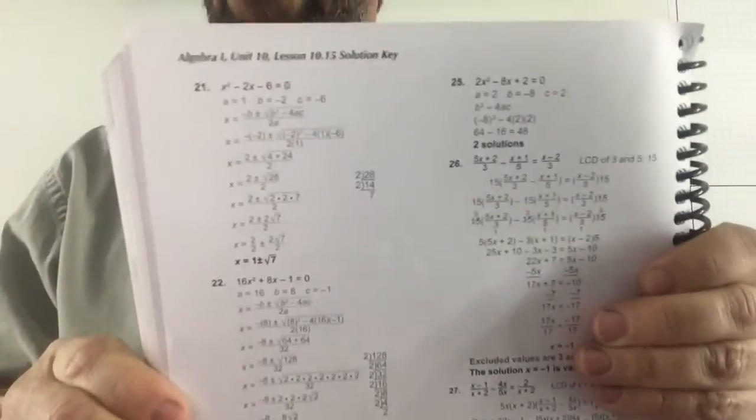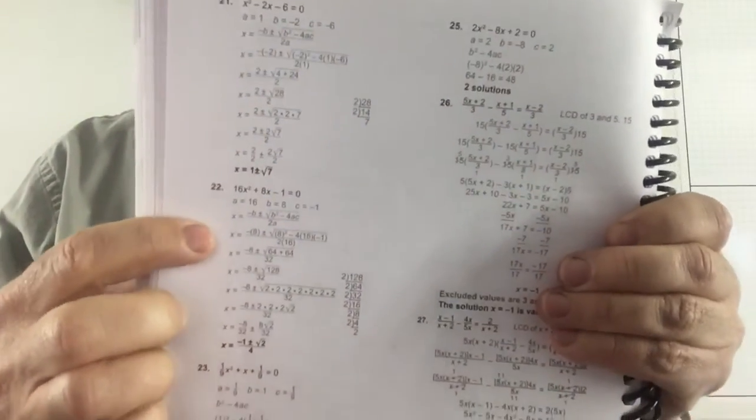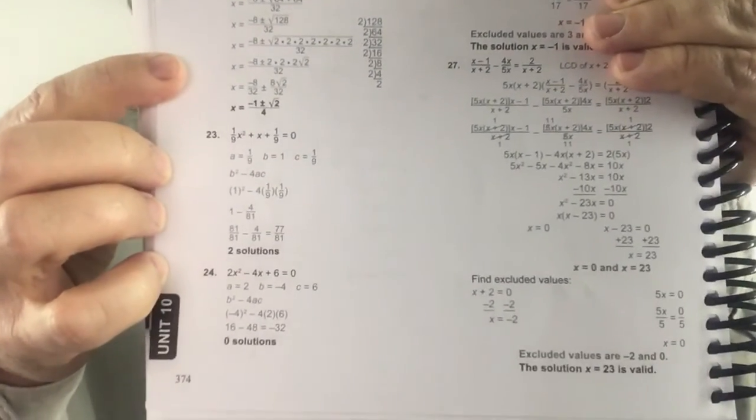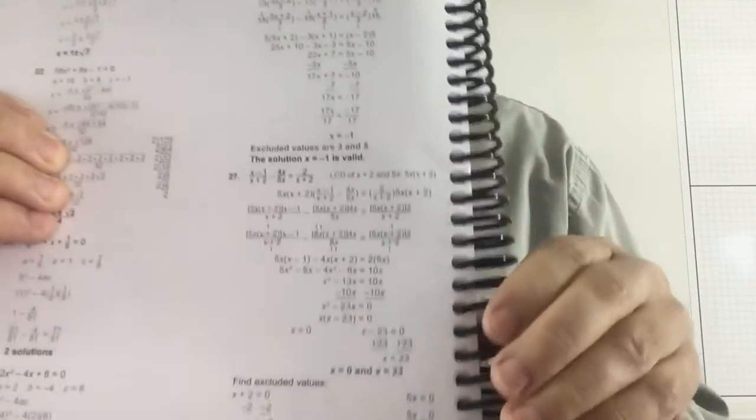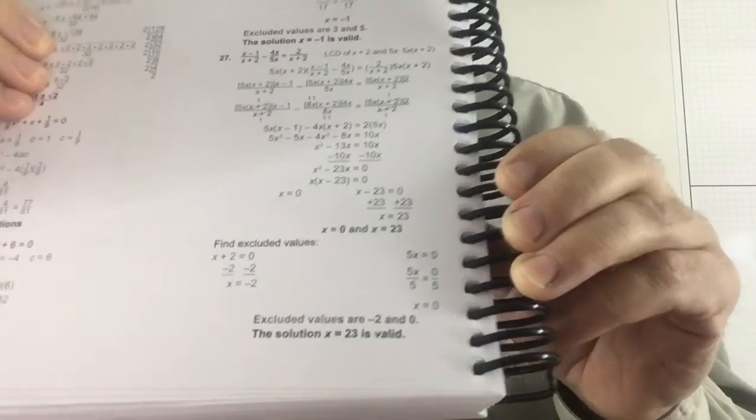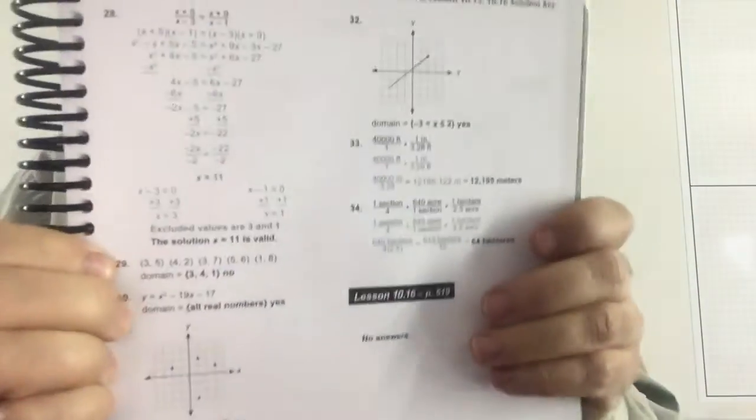This is page 21, 22, 23, 24, 25, 26, 27, 28 should be on this side.